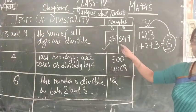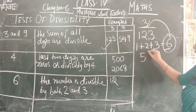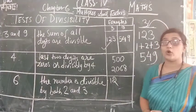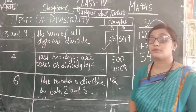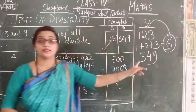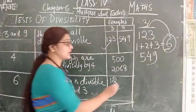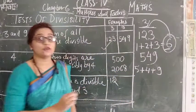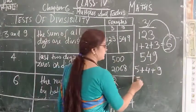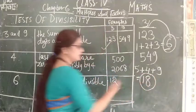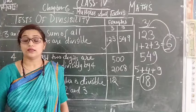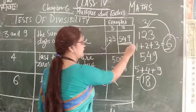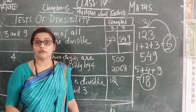Now next is the test of 9. The condition is the same — the sum of all digits should be divisible by 9. The example we are taking is 549. Just add 5 + 4 + 9: 5 + 4 = 9, and 9 + 9 = 18. This 18 is divisible by 9 because 9 × 2 = 18. So we can say that 549 is an example of divisibility by 9.